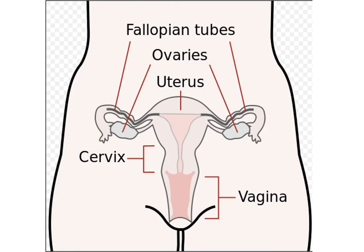The cervix is a part of the female reproductive system located between the uterus and the vagina. The cervix is made up of epithelium and underlying stroma, and is normally between 1-2 cm in length. Sperm passes through the cervical canal to the uterus where it may or may not be able to fertilize an egg.